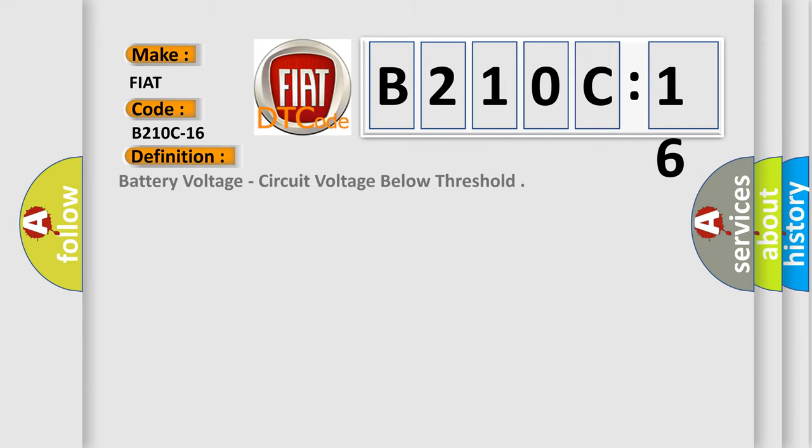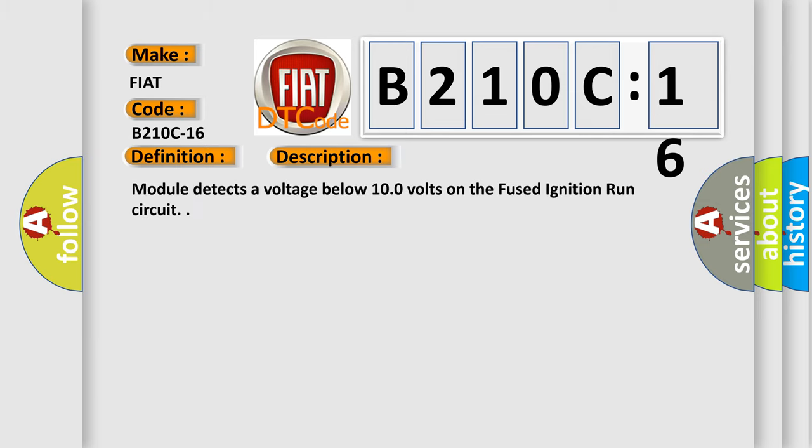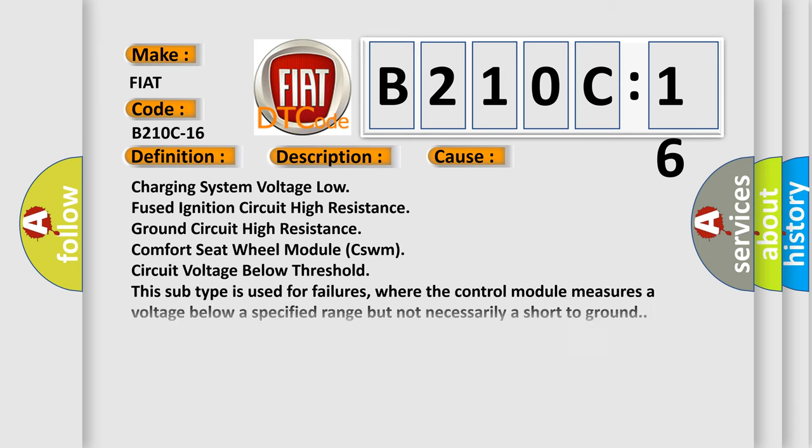The basic definition is Battery voltage circuit voltage below threshold. And now this is a short description of this DTC code. Module detects a voltage below 100 volts on the fused ignition run circuit. This diagnostic error occurs most often in these cases.